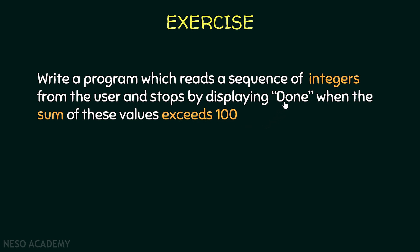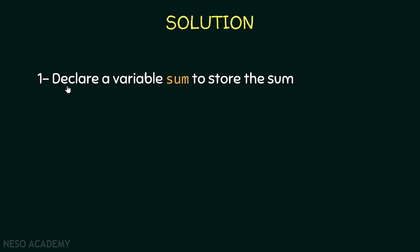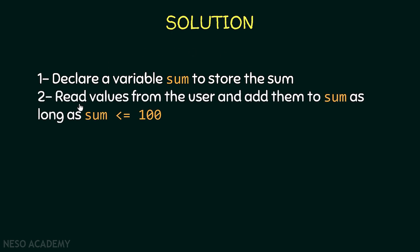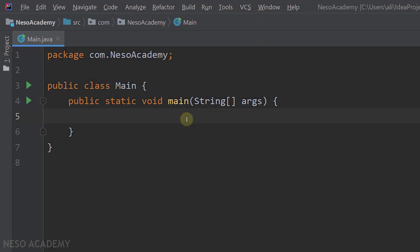Pause the video and try to solve this exercise. So let's see how we're going to solve it. We want to keep track of the sum of the values that the user enters, so we declare a variable 'sum' to store that sum. Then we read values from the user and add them to sum as long as sum is less than or equal to 100, using a loop. Finally, when the sum exceeds 100, we display 'done'.